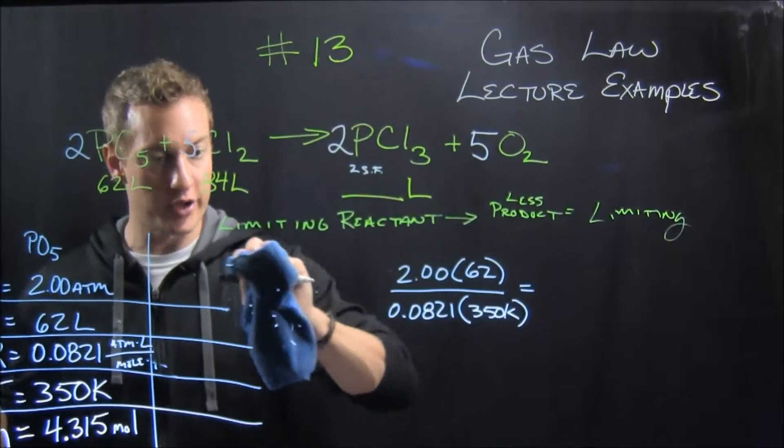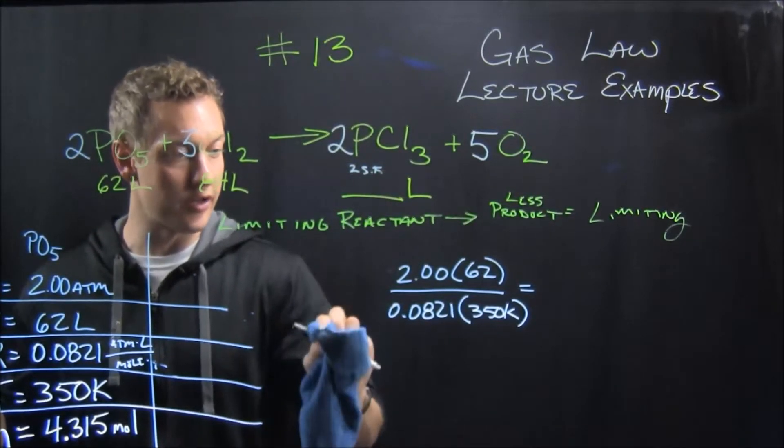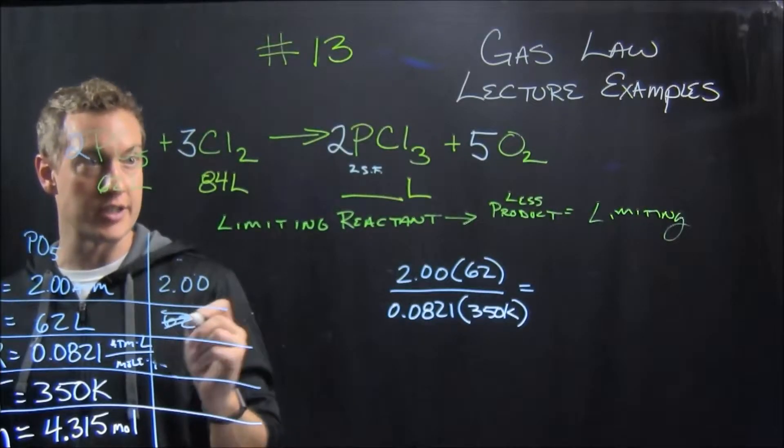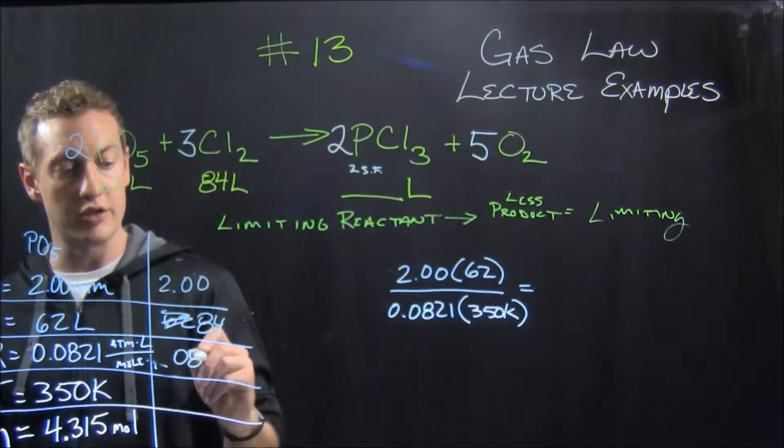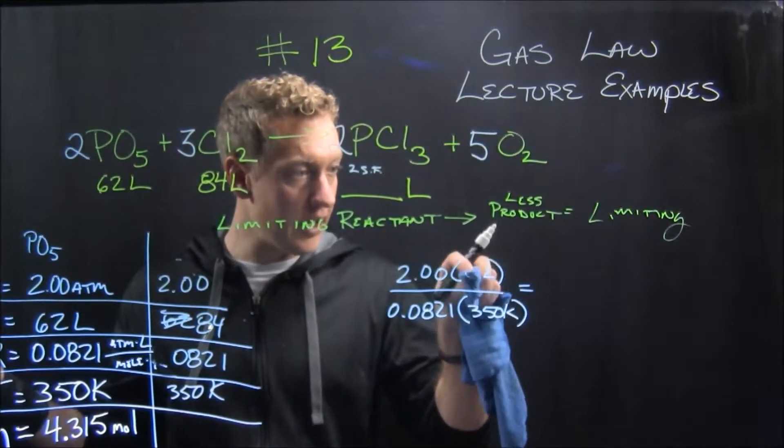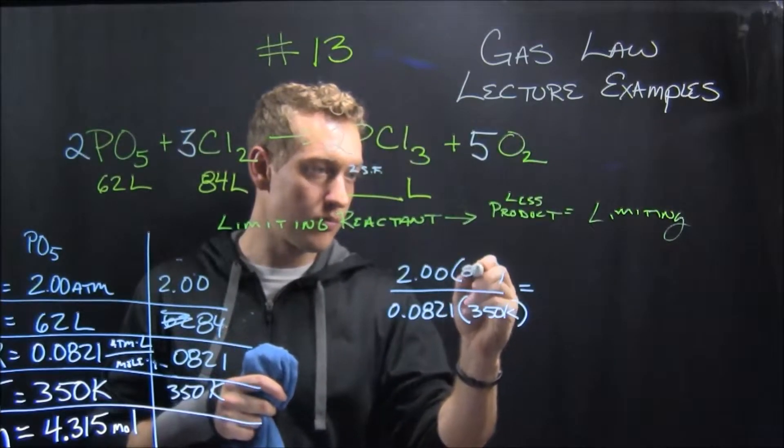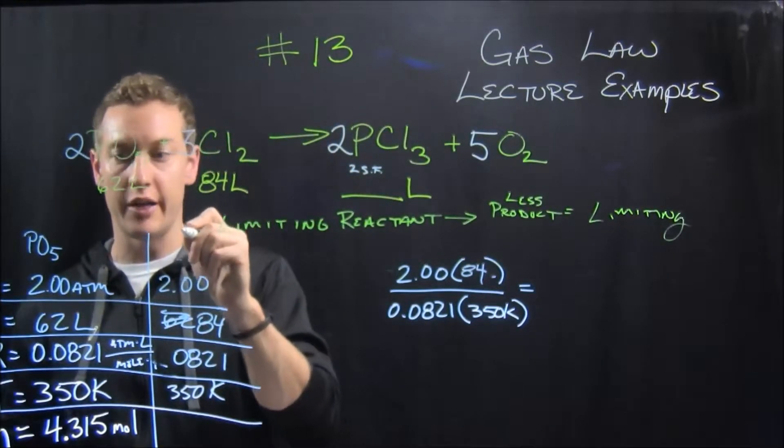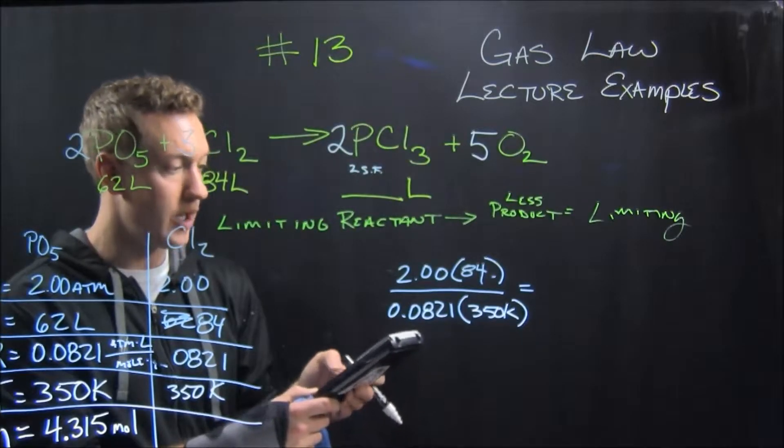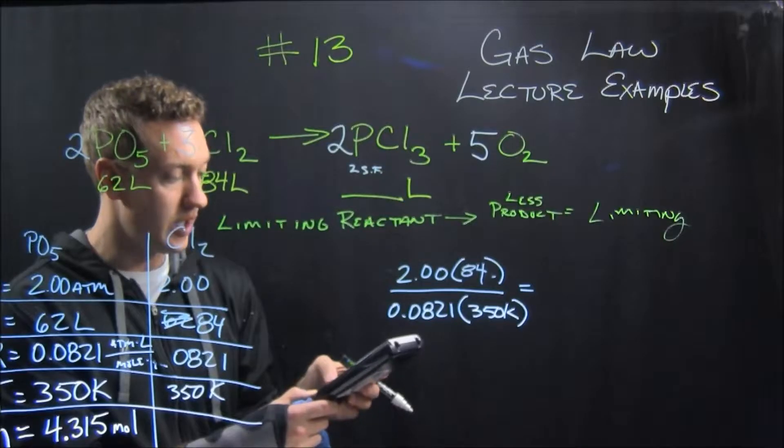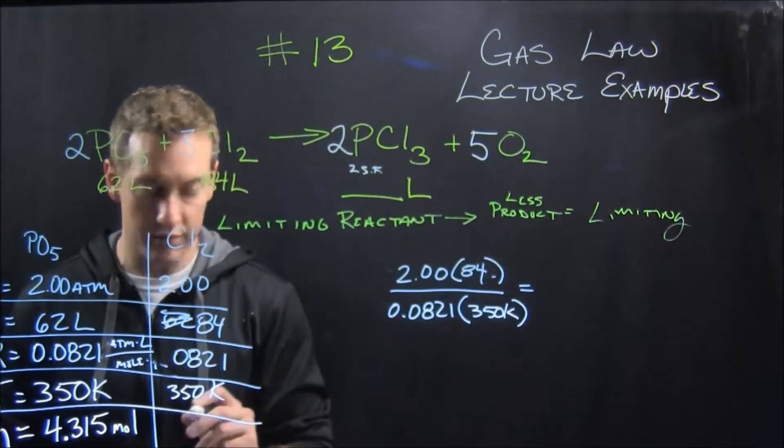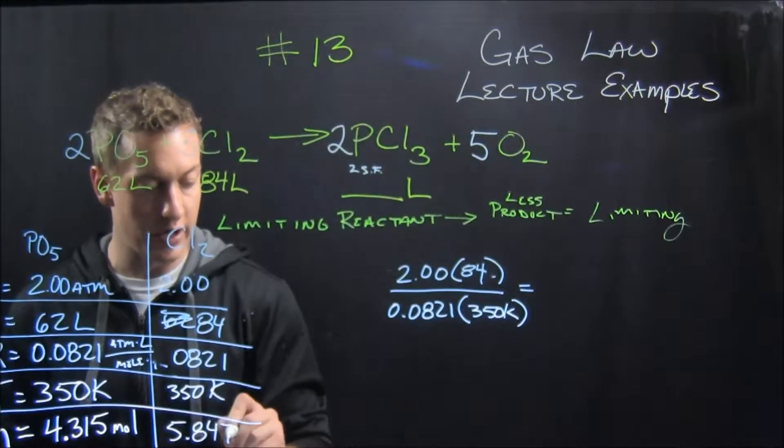And it's all the same conditions for the chlorine. So that means over here in this equation, right, because it's still 2.00, it's 62, or it's not 62, it's 84. It's 0.0821, and it's 350 Kelvin. So then I can sub in 84 into this exact same equation and figure out how many moles we could make from the chlorine. So 2 times 84 divided by 0.0821 times 350. And that gives me 5.847, 5.847 moles.